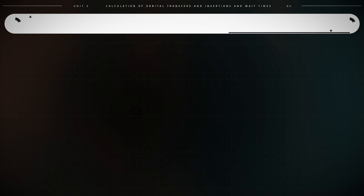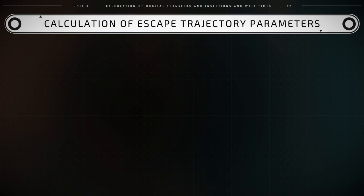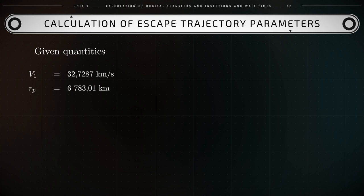Let's now calculate the numerical values of these quantities for the Hohmann transfer case where v1 equals 32.7287 kilometers per second and rp equals the radius of Earth plus the height of the spacecraft over the surface of the Earth, that equals 6371.01 kilometers plus 412 kilometers, giving rp equal to 6783.01 kilometers. As for gme, that equals 3.986 times 10 to the fifth kilometers cubed per second squared.